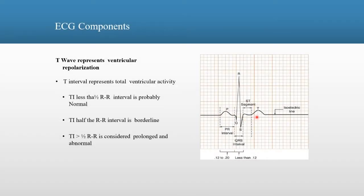The T-Wave demonstrates ventricular repolarization. The T-Interval represents total ventricular activity. If the T-Interval is less than one-half the R-to-R interval, it is probably normal.